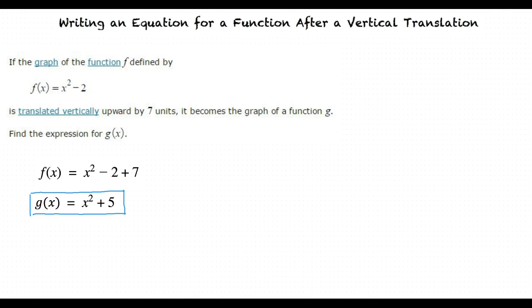Let's go ahead and plot our initial function and our final translated function in order to see this translation a little more clearly. The graph of our original function, f(x) = x² - 2, looks like this.